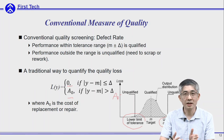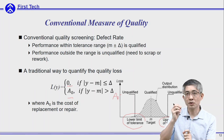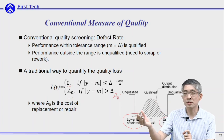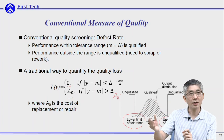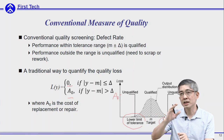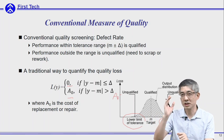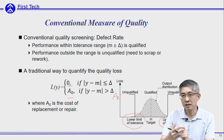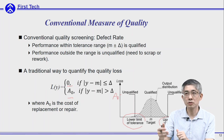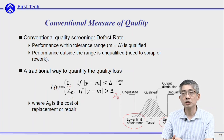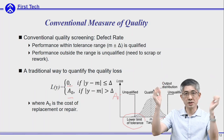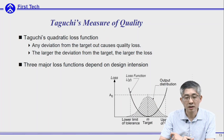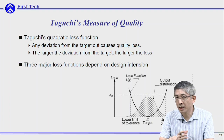The student who gets 69 points will be very unhappy, because their performance is very close to the student with 70 points. However, they have different fates — one needs to retake the course, but the other can pass. This is similar to the traditional measure of quality using the goalpost criteria.